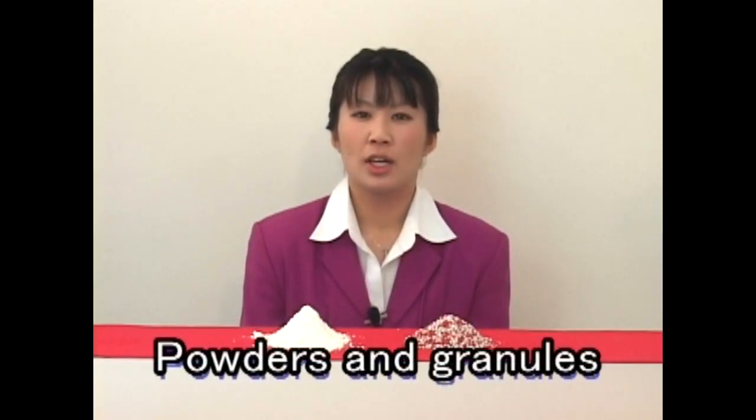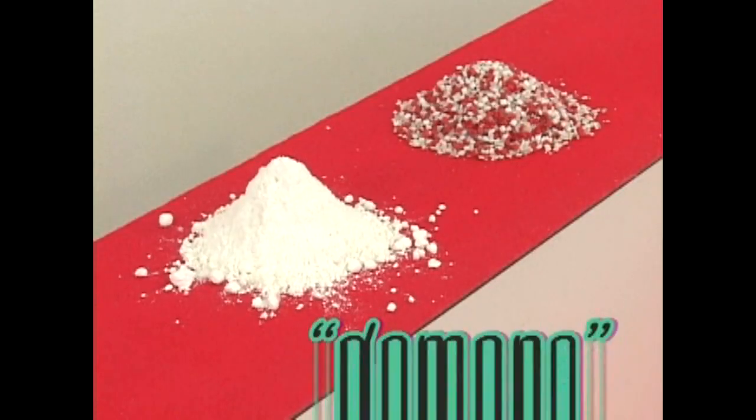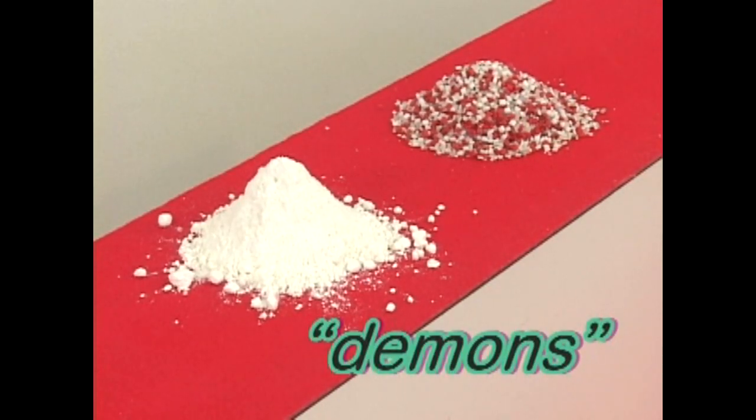The powders and granules used in factories are the demons. You can't see the blockages from outside the equipment, but all kinds of problems are happening within tanks.